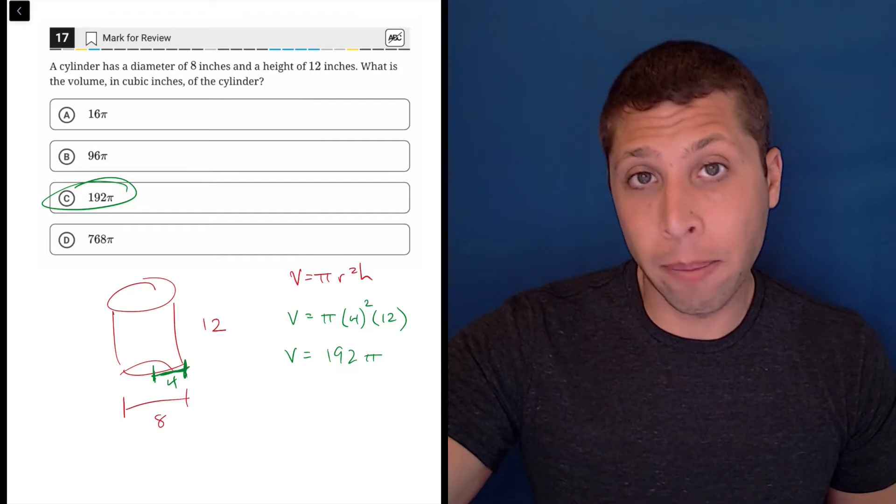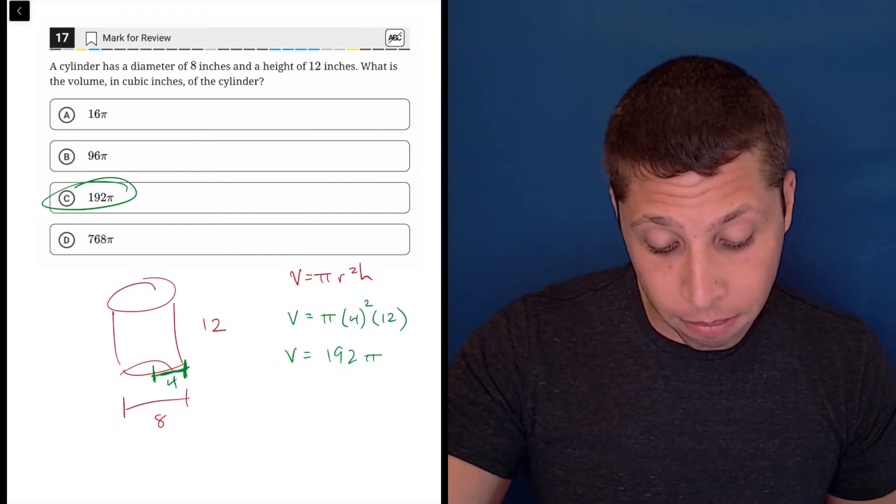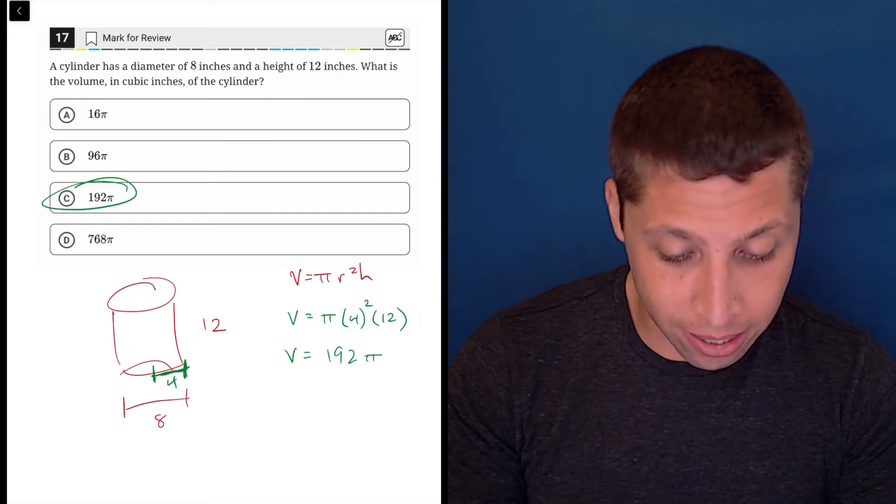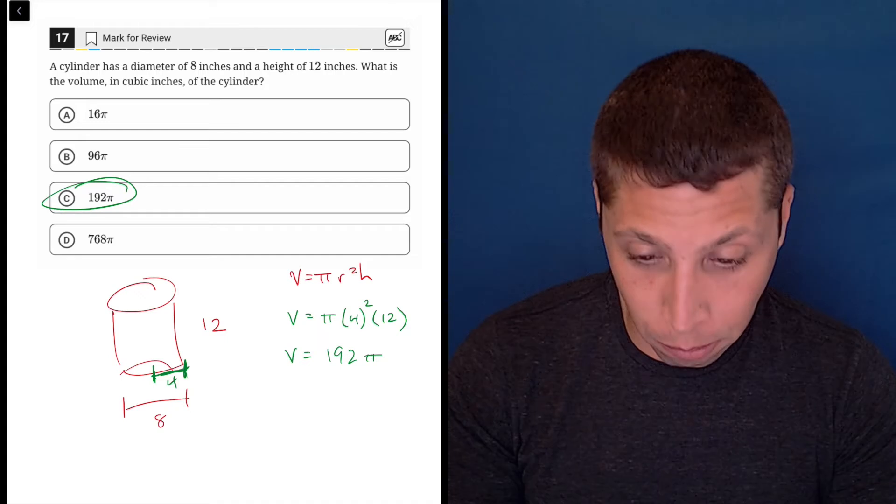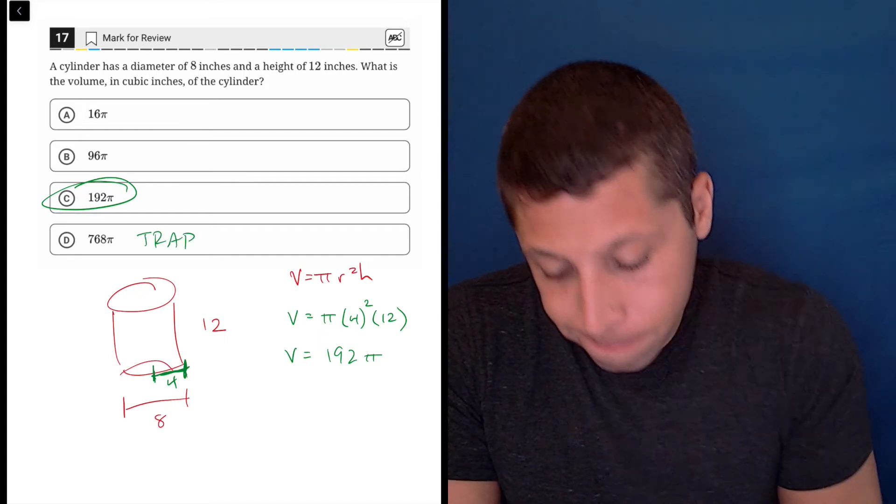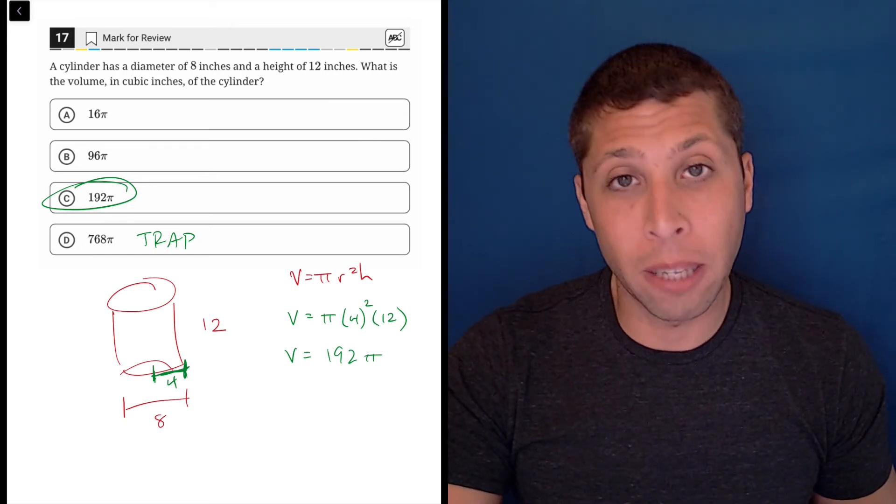Not hard, the math is really easy, especially with the calculator, but very easy to mess up. Very easy to just pretend that 8 is the radius, and I bet, let's see, 64 times 12, I bet you is 768. Yep, trap. Know they're coming, know those traps are coming, and you're going to avoid them much more easily.